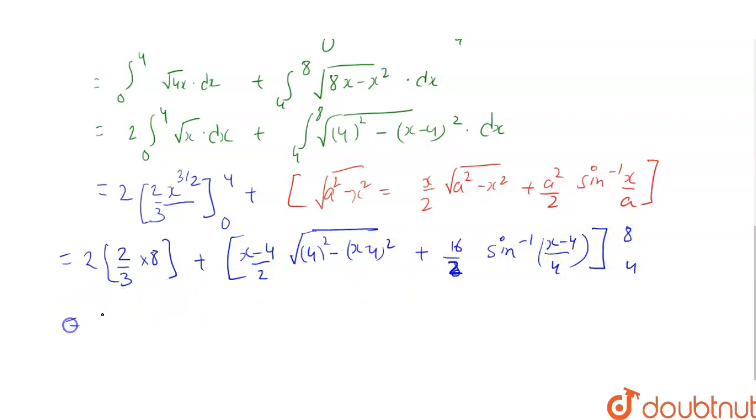Here, it becomes 32 by 3, plus 2 into, when we put limit as 8, 2 into 16 minus 16 upper limit, plus 8 sin inverse 1, minus 0, minus 8 sin inverse 0 when we put 4 as the limit.